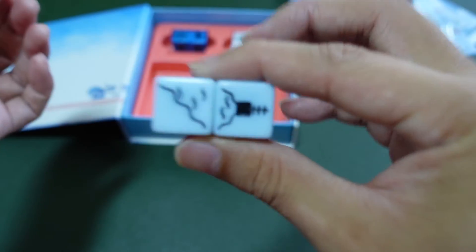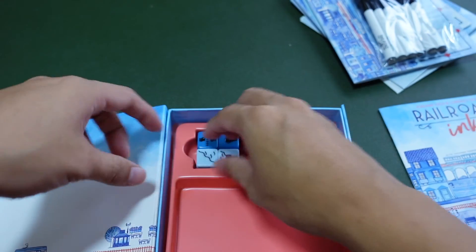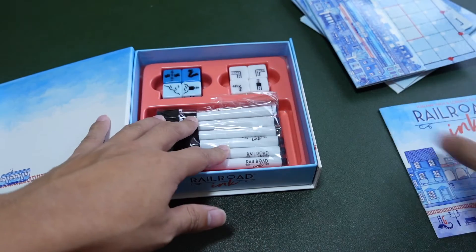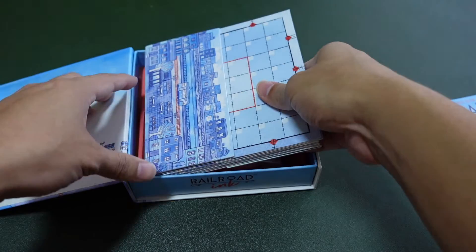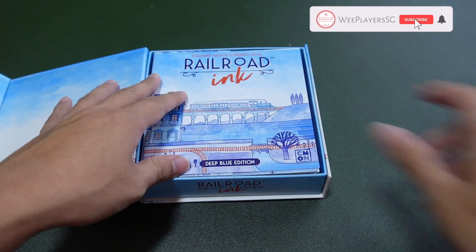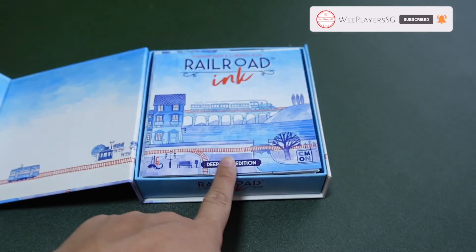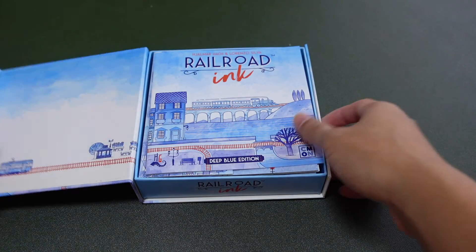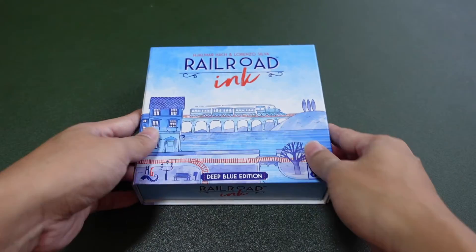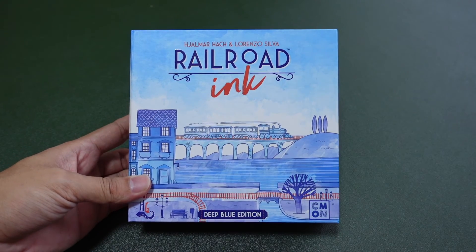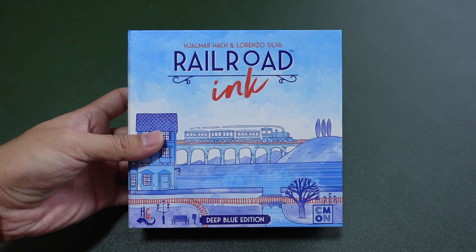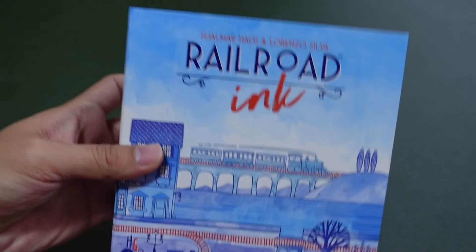That's all for the unboxing. If you like what I'm doing here, please subscribe and give us a like. Let me know whether the Deep Blue version or the Blazing Red version is nicer if you happen to own both, or what you think about this game. This is Railroad Ink, Deep Blue Edition. Thanks for watching.